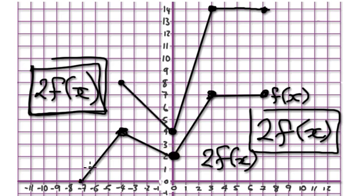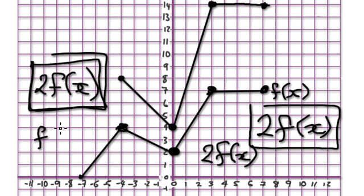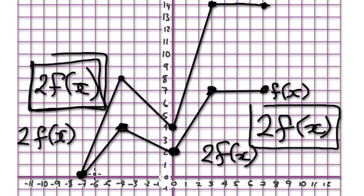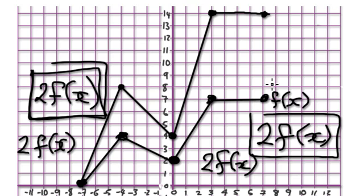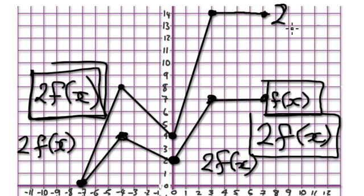Let's look at minus 7. Normal f of x would be 0 here, and 2 times 0 would be 0, so it would still be at this point. So your answer here should look like this. f of x is this line here, but 2 f of x is this line here — and this here would be your answer.